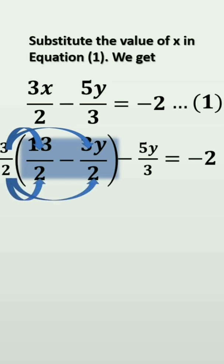Then, next step is to multiply. So, 39 by 4 minus 9y by 4.